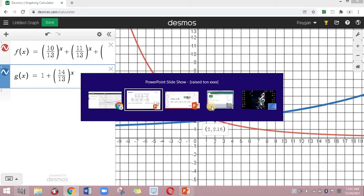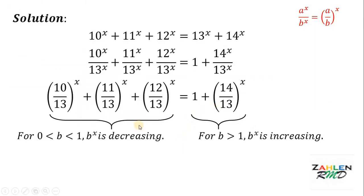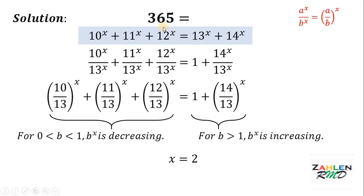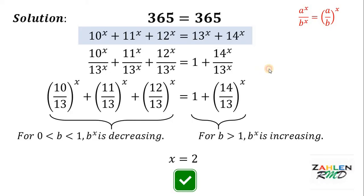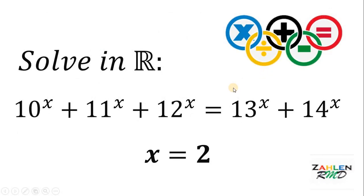Now let's verify this result. Let's go back to our original equation. From the graph, we see that x equals 2 satisfies the equation. Plugging in x equals 2: 10 squared gives us 100, 11 squared is 121, and 12 squared is 144. So 100 plus 121 plus 144 gives us 365. On the right-hand side, 13 squared gives us 169 and 14 squared gives us 196; 169 plus 196 also gives us 365. Therefore, x equals 2 is a legitimate solution, and the only real solution to this equation is x equals 2. And we're done.